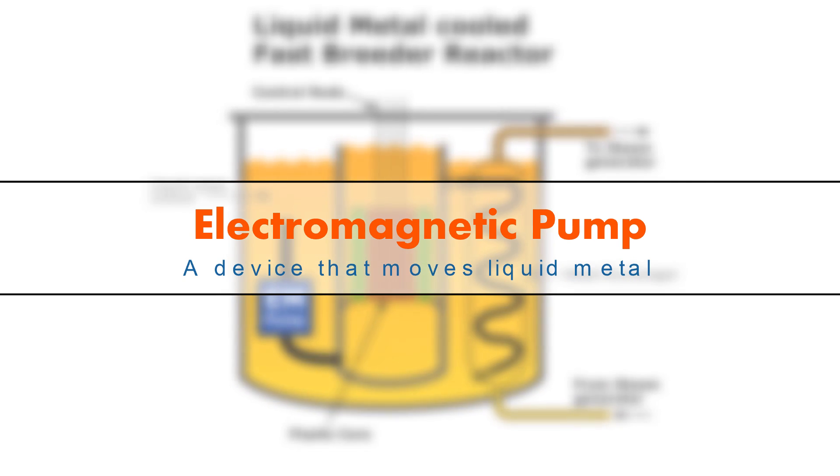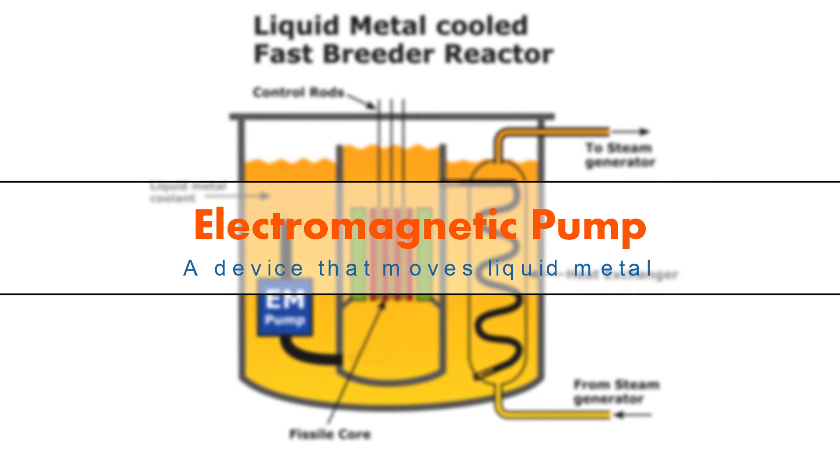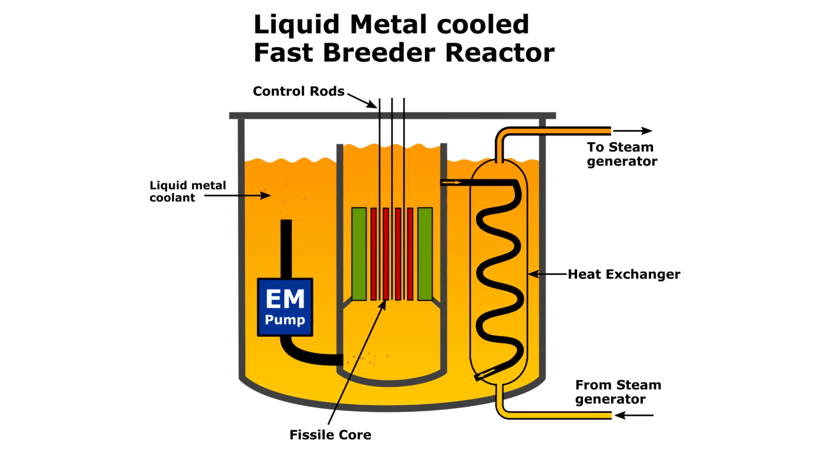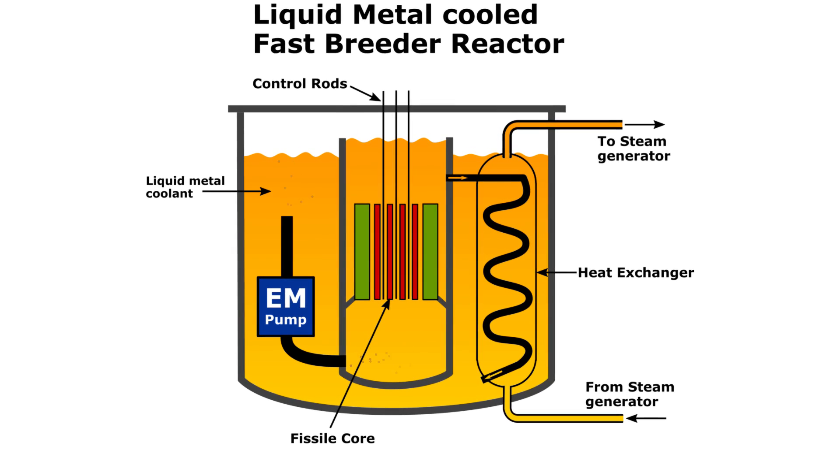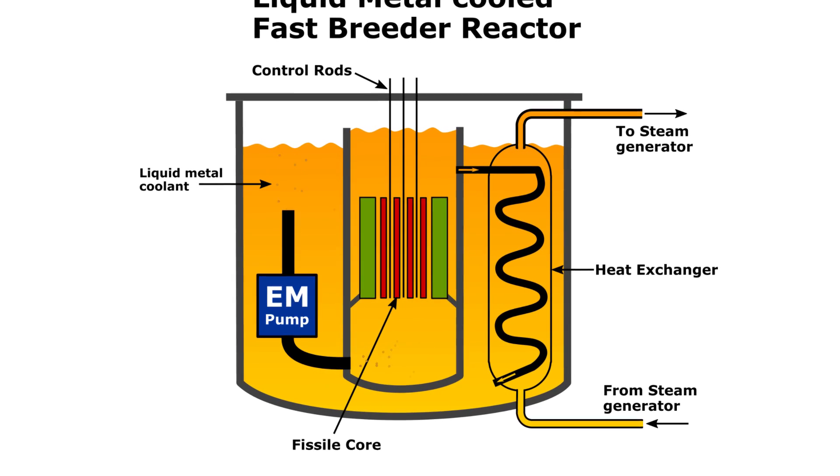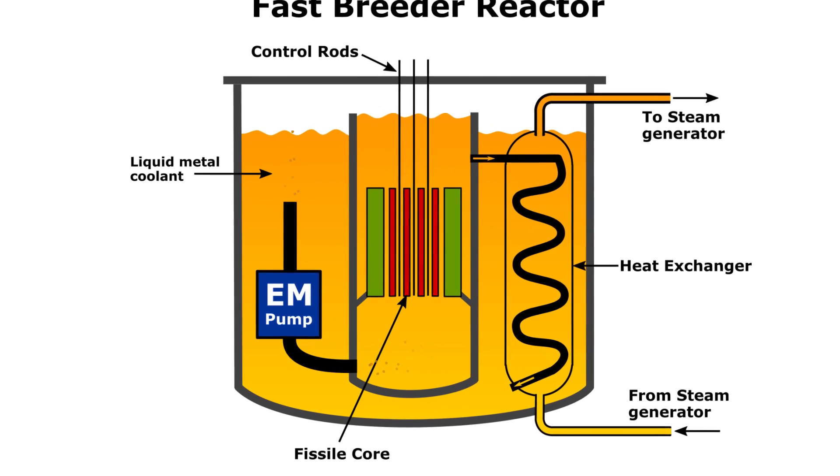Electric magnetic pump, a device that pumps liquid metal. An electric magnetic pump, or EM pump, is a pump that moves liquid metal through the direct use of a magnetic field.